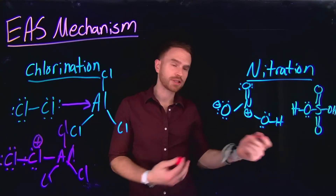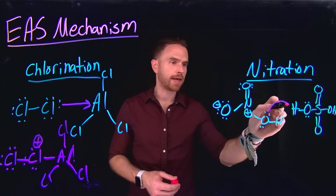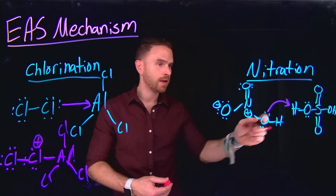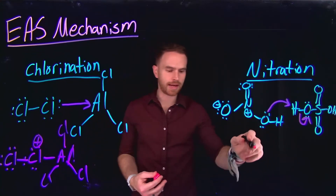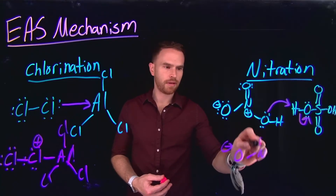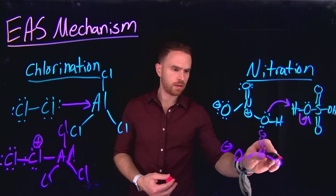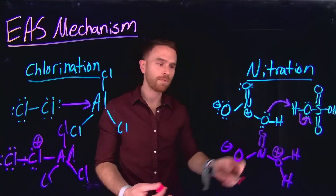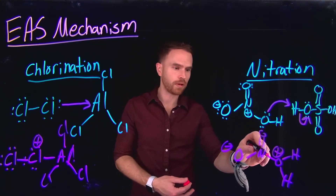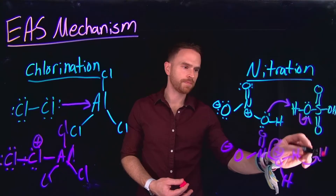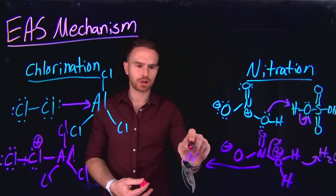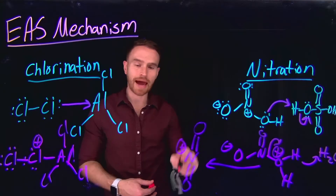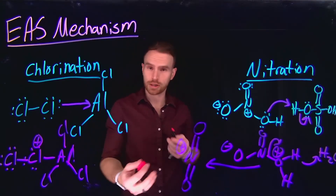Similarly, for nitration, the first step also requires an activation where you have an electron pair that attacks a proton from nitric acid to sulfuric acid, kicking off these electrons and generating an intermediate species. Now this portion of the molecule is positively charged and can act as a good leaving group. If it were to do so, this would release water but also leave behind the nitronium ion, which is an incredibly activated species at the nitrogen position — and now this is our electrophile with which we can add to benzene.